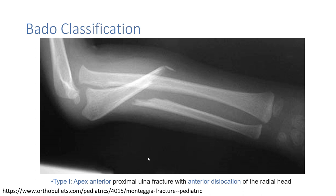By classification, here is Type 1 of the Monteggia fracture, where we can see an anterior proximal ulnar fracture with anterior dislocation of the radial head.